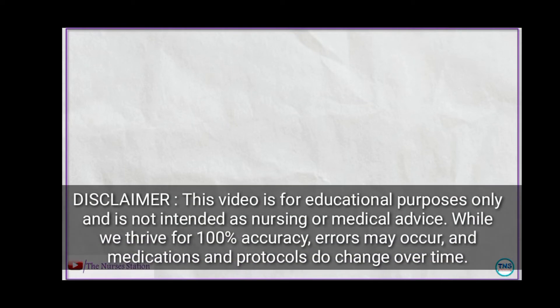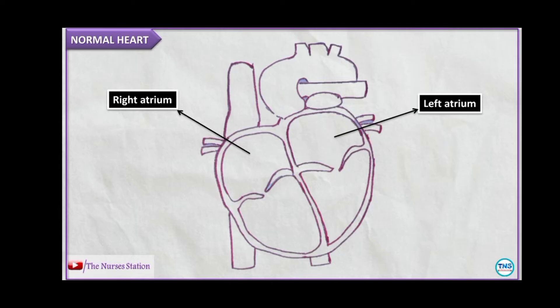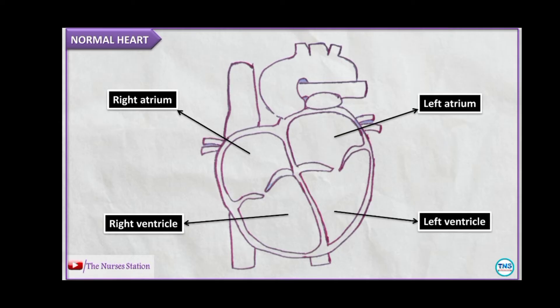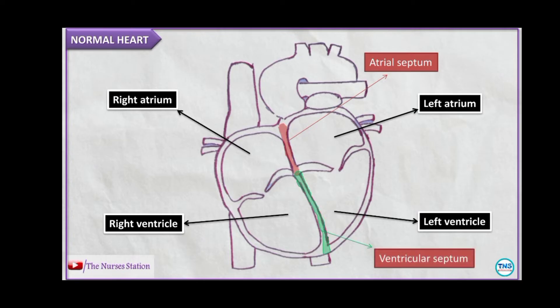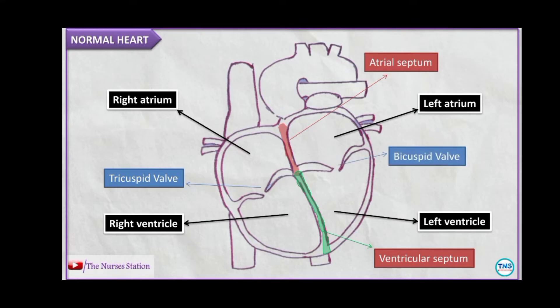In this video, we will talk about the atrioventricular canal defect, also known as the AV canal defect. Normally, the heart has 4 chambers, with the right and left atria at the top and the right and left ventricles below. The atria are separated by the atrial septum and the ventricles by the ventricular septum. The tricuspid valve guards the right AV opening and the bicuspid valve guards the left. These valves ensure blood flows in only one direction with no backflow.